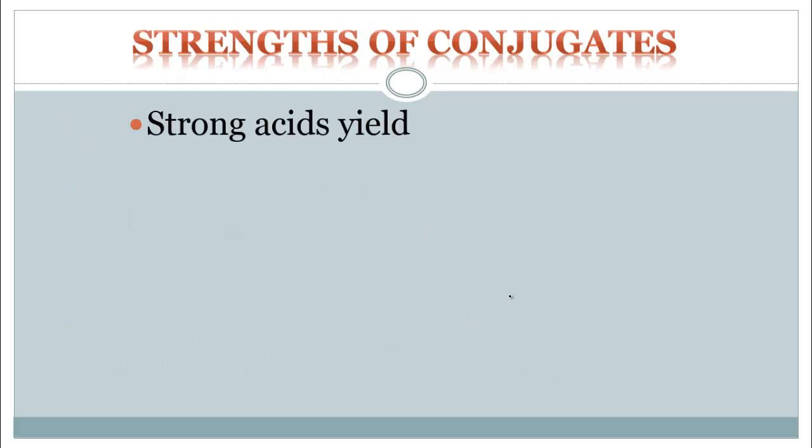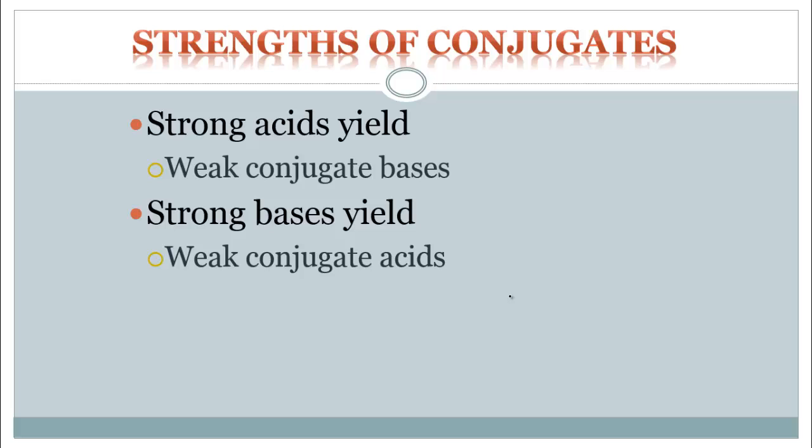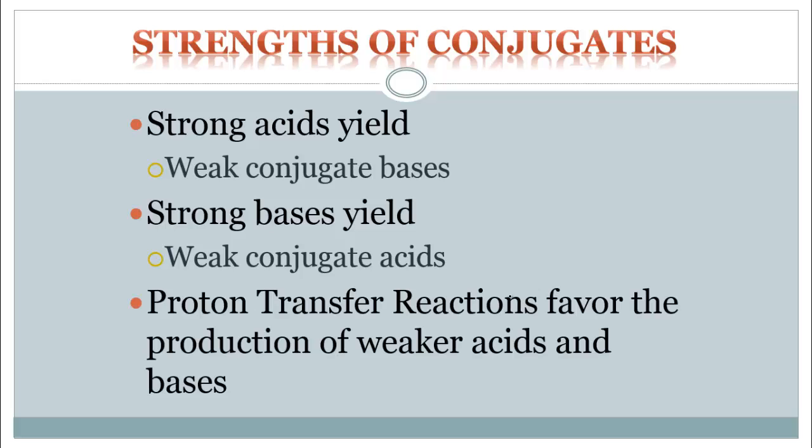So how do the strengths of the conjugates relate? We haven't really talked about strengths of acids or bases. But as you look at conjugates, why don't we call it just an acid? Why is it a conjugate acid? Or why don't we call it just the base? Why is it a conjugate base? Well, strong acids will yield weak conjugate bases. So they're not going to be the same. If it was a strong to begin with, it's not going to be strong to end with. A strong base will yield a weak conjugate acid. So these proton transfer reactions will favor production of weaker acids and bases. So we're basically taking something that was stronger and making it weaker each time we go through a proton transfer.